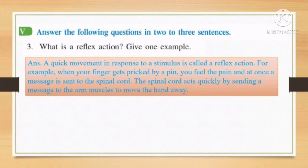A simple example of a reflex action is whenever we touch any hot object, suddenly we bring our hand back. When we touch the hot object, our finger feels it warm, and from the skin present in our hand a message is sent with the help of nerves to the spinal cord. The spinal cord acts there instead of the brain. In the case of reflex action, the spinal cord takes the decision and it helps us to respond quickly.